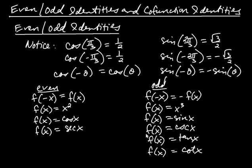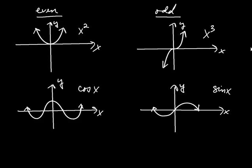Before we see how to use these even and odd identities to simplify expressions, let's look at what they say about the graphs of these functions.